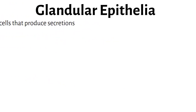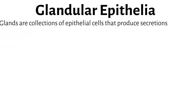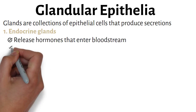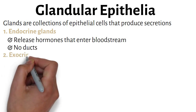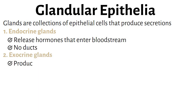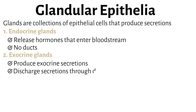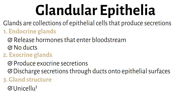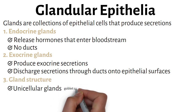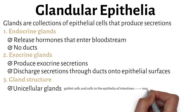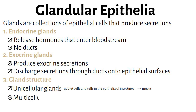Glands are collections of epithelial cells that produce secretions. Endocrine glands release hormones that enter the bloodstream. Exocrine glands produce secretions but discharge them through ducts onto the epithelial surfaces. Gland structures include unicellular glands, which include goblet cells and cells in the epithelia of the intestines that secrete mucin, which mixes with water to form mucus, and multicellular exocrine glands, which are classified by the structure of the duct.